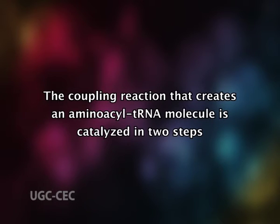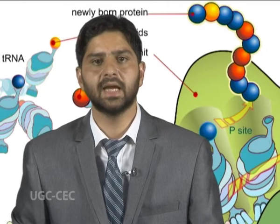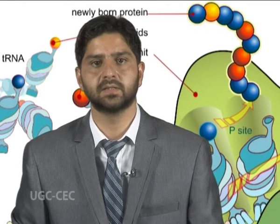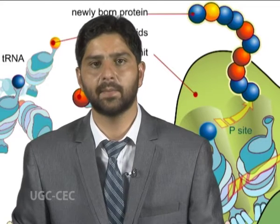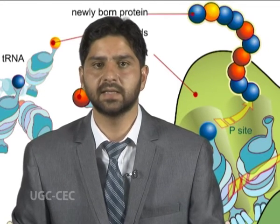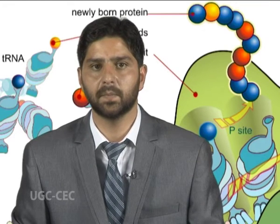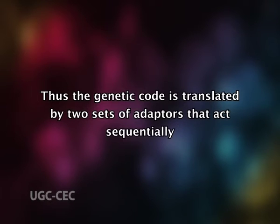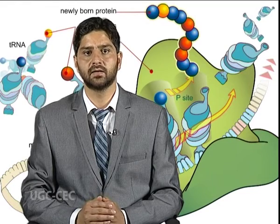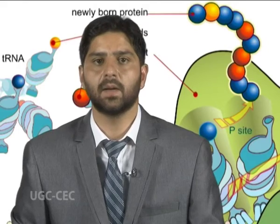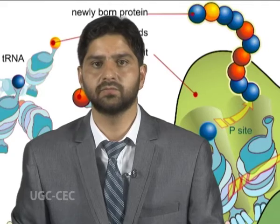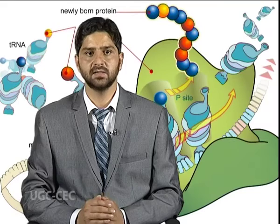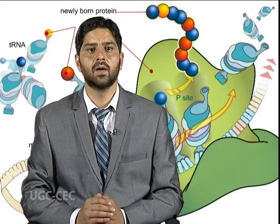The coupling reaction that creates an aminoacyl tRNA molecule is catalyzed in two steps. Although the tRNA molecules serve as the final adapters in converting nucleotide sequences into amino acid sequences, the aminoacyl tRNA synthetase enzymes are adapters of equal importance to the decoding process. Thus, the genetic code is translated by two sets of adapters that act sequentially, each matching one molecular surface to another with great specificity — their combined action associates each codon in the mRNA with its particular amino acid.